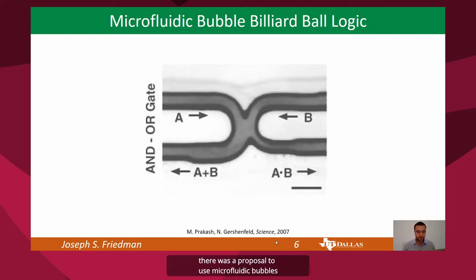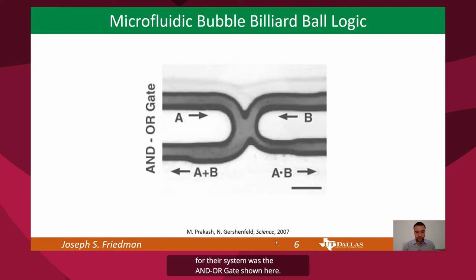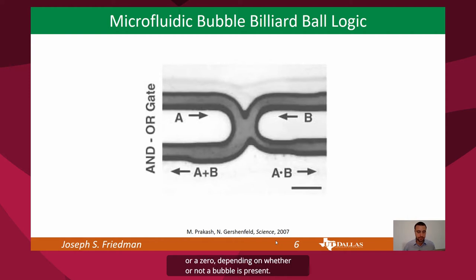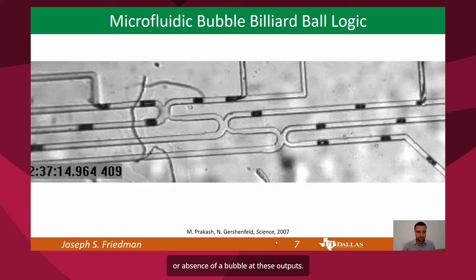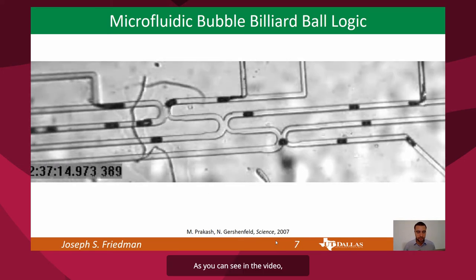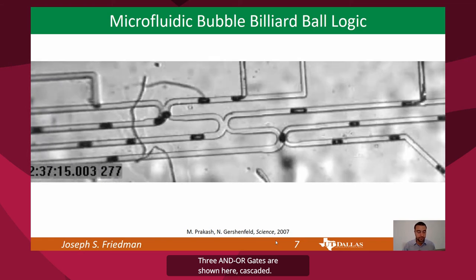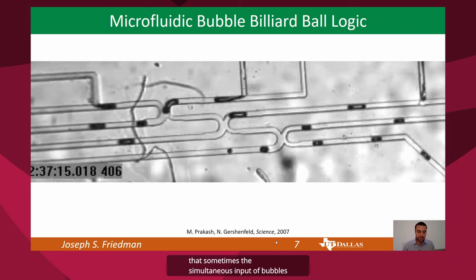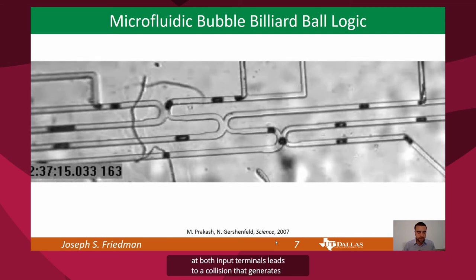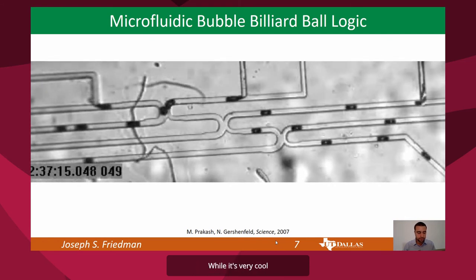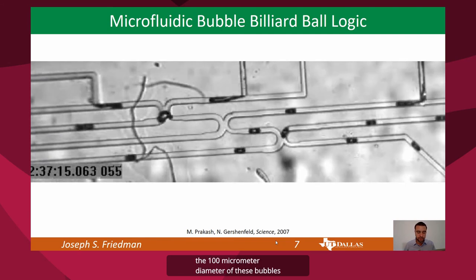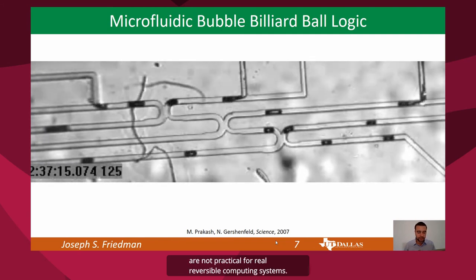More recently, there was a proposal to use microfluidic bubbles as billiard balls. The logic gate for their system is the AND-OR gate shown here. There are two inputs, A and B, defined as either a 1 or a 0 depending on whether or not a bubble is present. The AND and OR outputs are computed simultaneously, with a signal encoded by the presence or absence of a bubble at these outputs. As you can see in the video, they experimentally demonstrated this microfluidic billiard ball concept with three AND-OR gates cascaded. The logic gates don't work perfectly, but sometimes the simultaneous input of bubbles at both input terminals leads to a collision that generates AND and OR output bubbles. While it's very cool, the 100 micrometer diameter of these bubbles is not practical for real reversible computing systems.